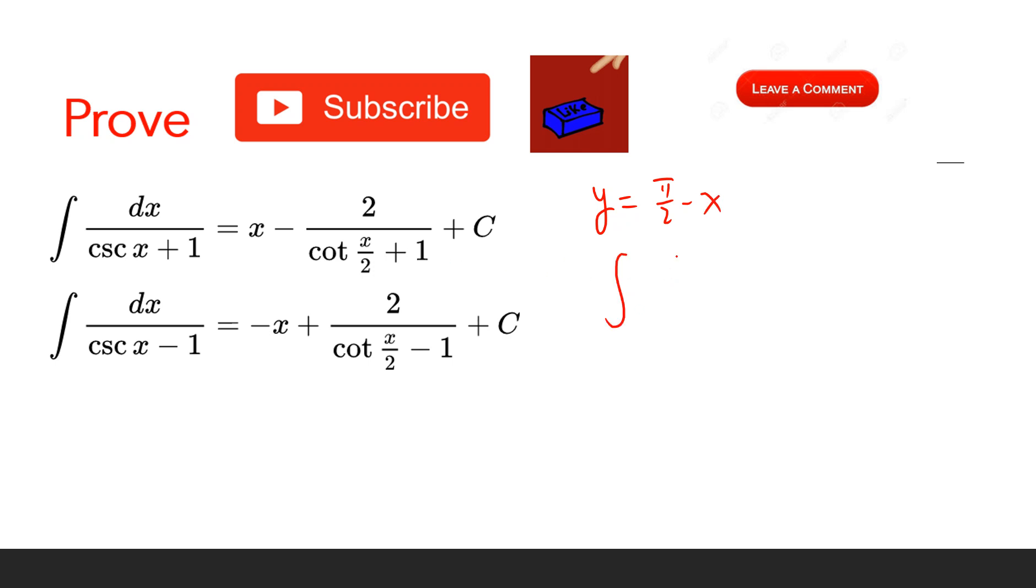So dy equals minus dx. Cosecant of π/2 minus y equals secant y, so this becomes the integral of minus dy over secant y plus 1.